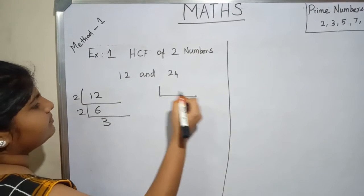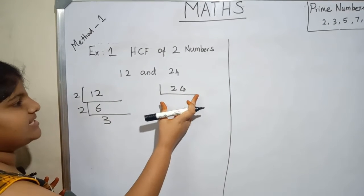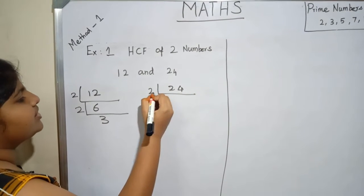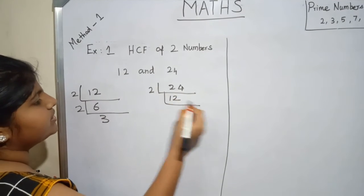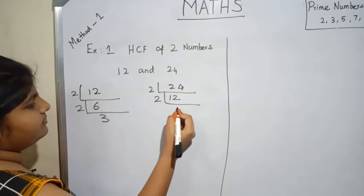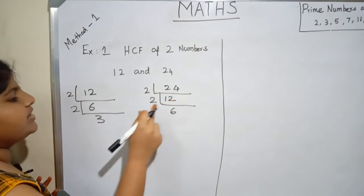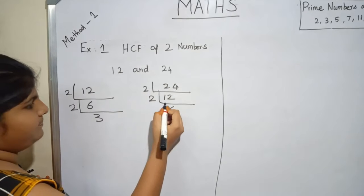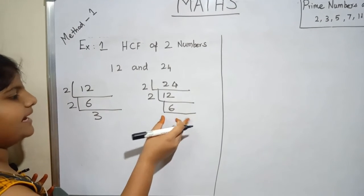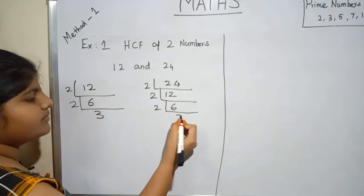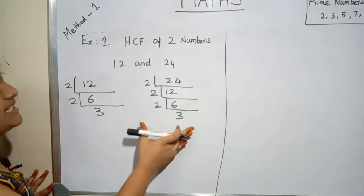Now we take 24. 24 is an even number, it is divisible by 2. 2 twelves are 24. Again, 12 is divisible by 2 — 2 sixes are 12. 6 is an even number, so it is divisible by 2. 2 threes are 6. We stop here because 3 is a prime number.